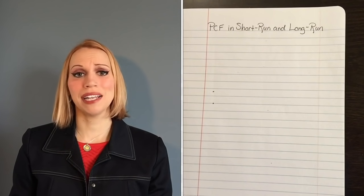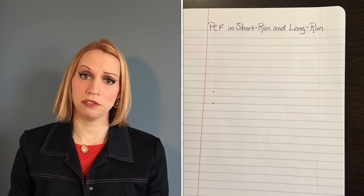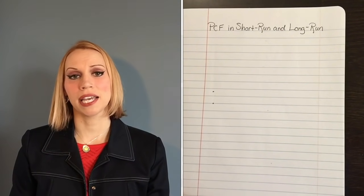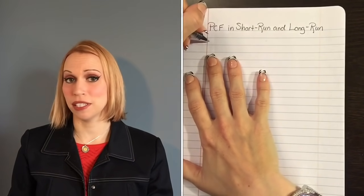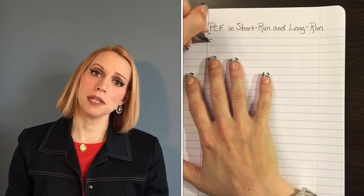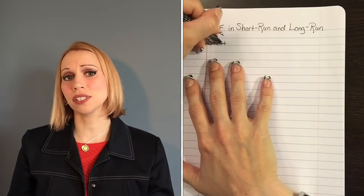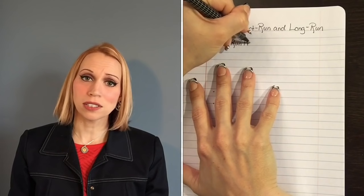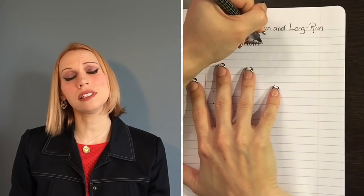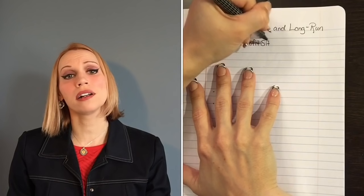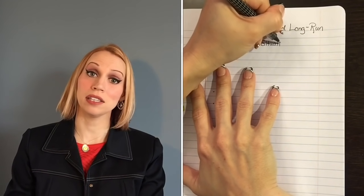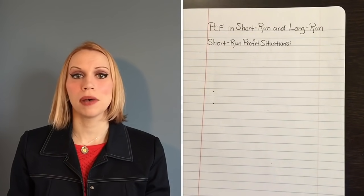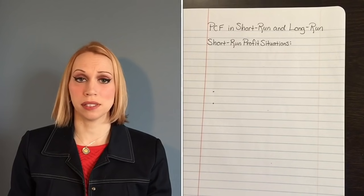The short run by definition is a period of time where you have at least one fixed resource — at least one thing you're kind of stuck with. For our notes today, you can think of the short run as like maybe a season. Do you know any businesses that are open for the summer but then shut down for the winter? Those businesses aren't shutting down for good — they're just temporarily stopping production, shutting down for a season and then opening back up.